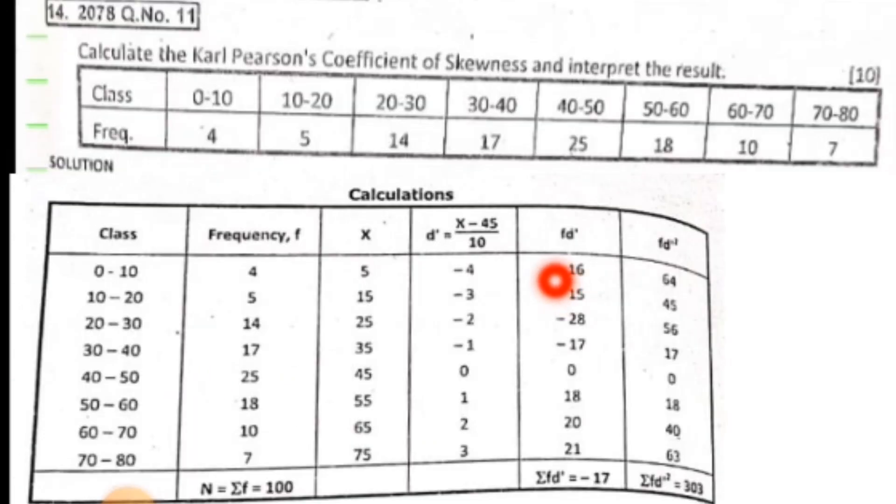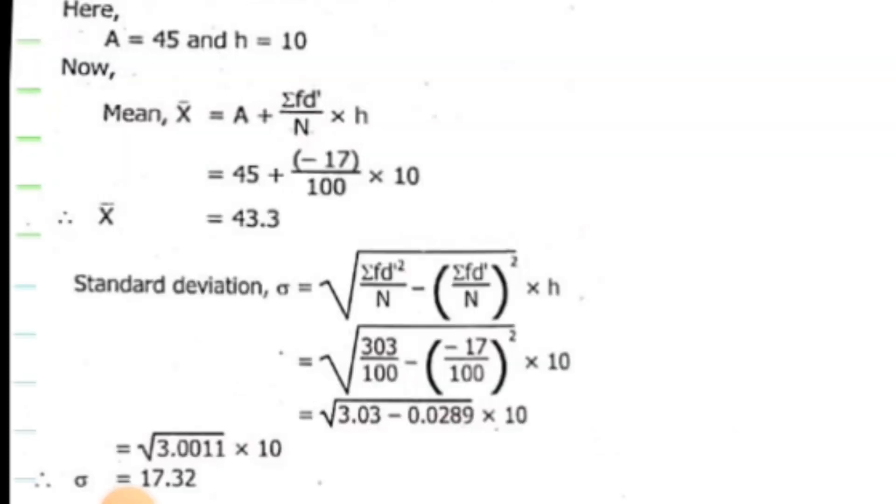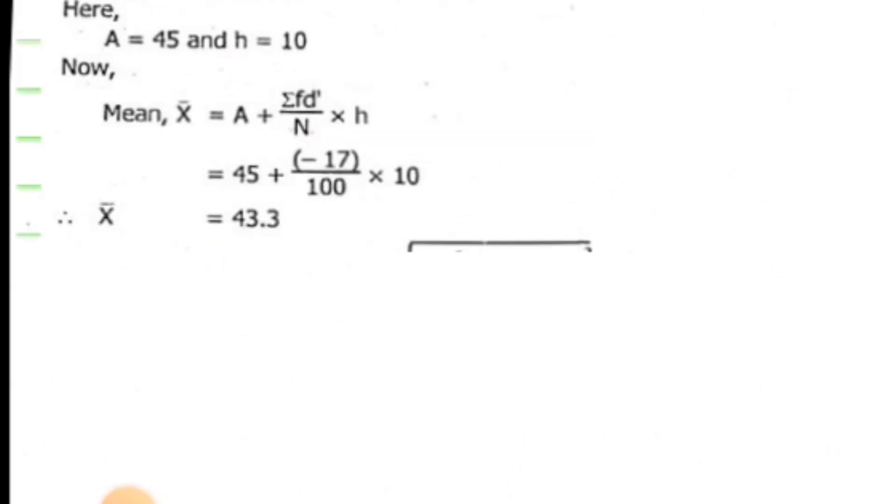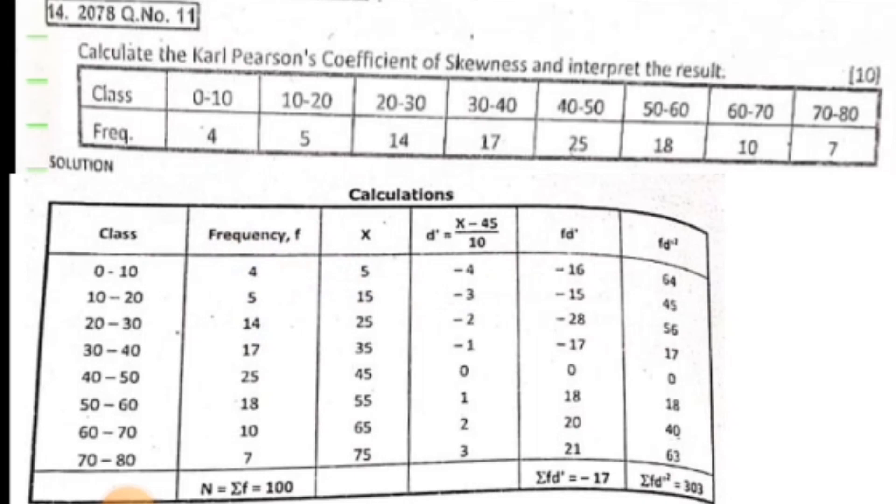Now we need the mode. The mode formula is L plus delta 1 upon delta 1 plus delta 2 into h, where delta 1 equals f1 minus f0 and delta 2 equals f1 minus f2. Looking at the frequency table, the maximum frequency is 25, so the modal class is 40 to 50.